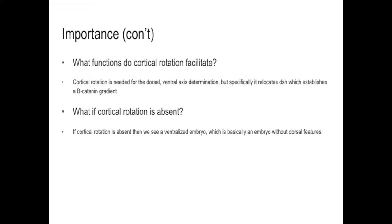What functions does cortical rotation facilitate? Cortical rotation is needed for the dorsal-ventral axis determination, but specifically it relocates disheveled, which establishes a beta-catenin gradient. If cortical rotation is absent, then we see a ventralized embryo, which is basically an embryo without dorsal features.